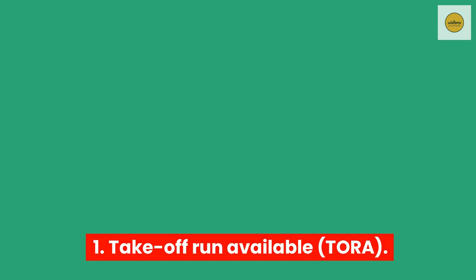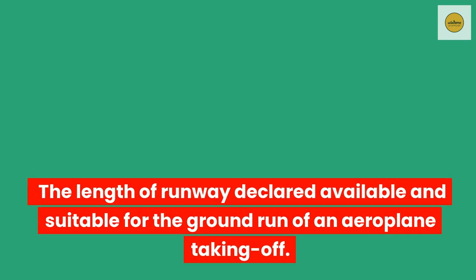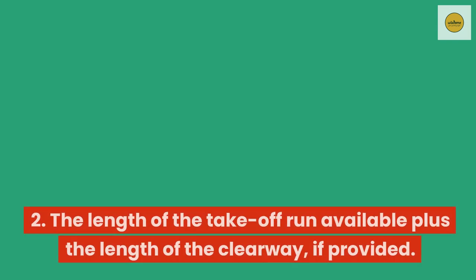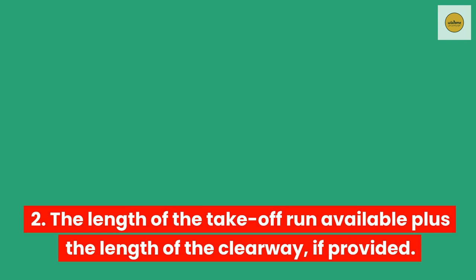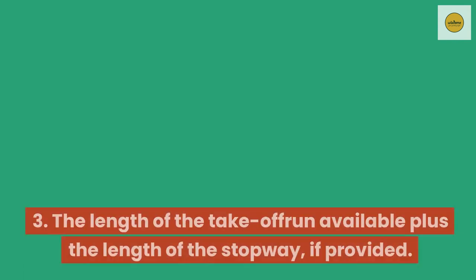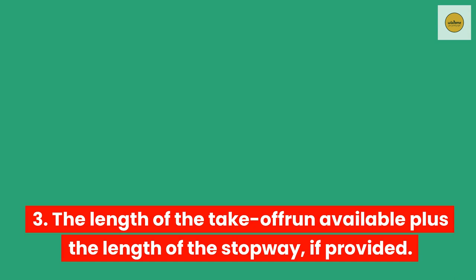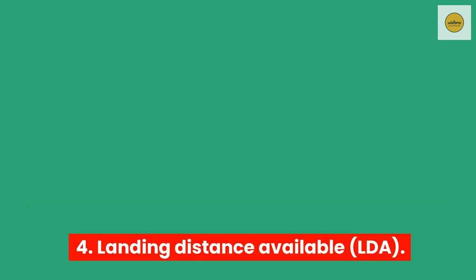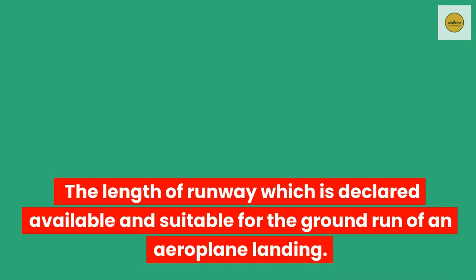Declared distances. (1) Take-off run available (TORA). The length of runway declared available and suitable for the ground run of an aeroplane taking off. (2) Take-off distance available (TODA). The length of the take-off run available plus the length of the clearway, if provided. (3) Accelerate stop distance available (ASDA). The length of the take-off run available plus the length of the stopway, if provided. (4) Landing distance available (LDA). The length of runway which is declared available and suitable for the ground run of an aeroplane landing.